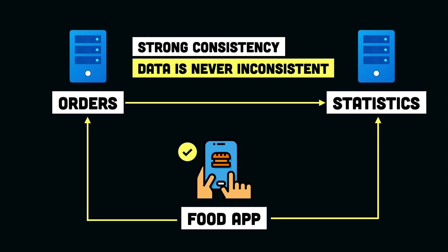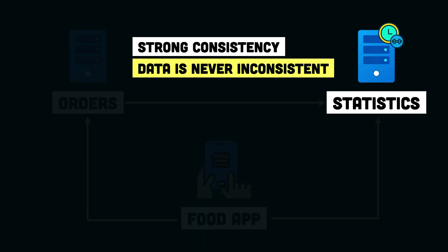But there is one issue with this approach. Let's say our stats service has a lot of complex logic and it has started taking too much time to update the orders count. According to our current implementation, even though the user's order has been created, we will keep the user waiting because the order service is not going to return the response — it is busy making sure that the stats service has the correct number of orders.